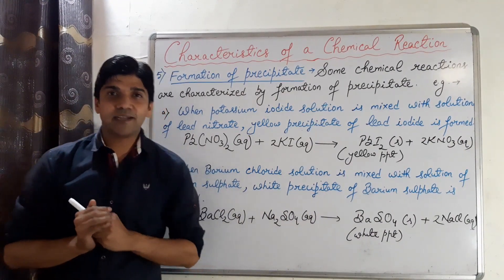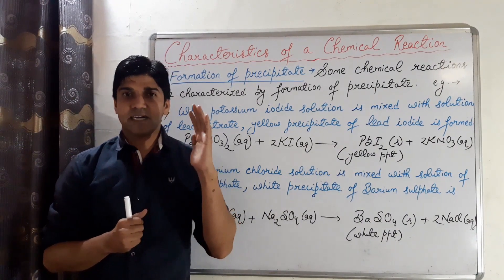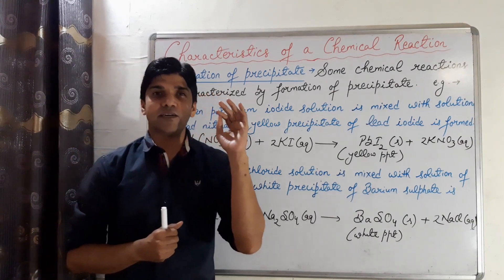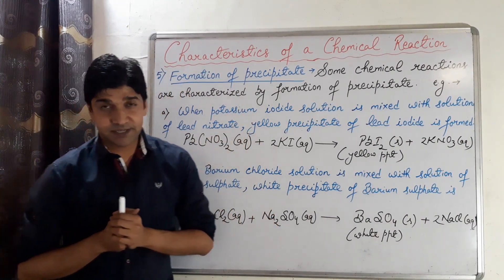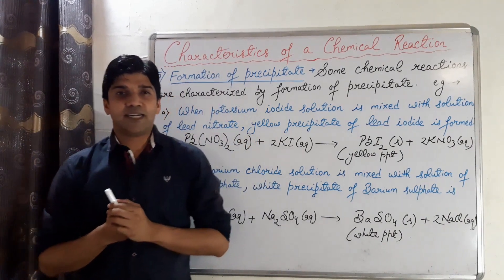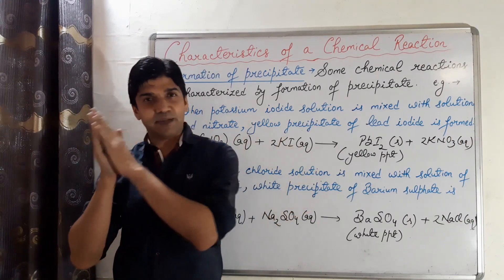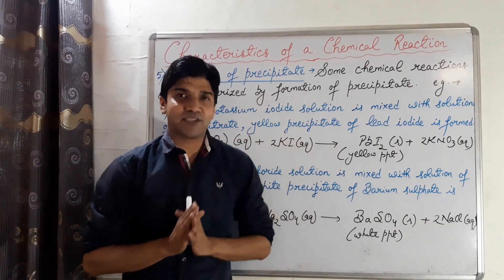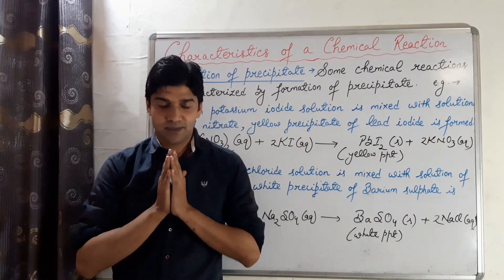Today we covered five characteristic features of a chemical reaction: first, evolution of a gas; second, change in temperature; third, change in color; fourth, change in physical state; and fifth, formation of a precipitate. In the next lecture, we will discuss balancing of chemical equations — what are balanced and unbalanced chemical equations and how to balance them using the hit and trial method. Thank you, Namaste.